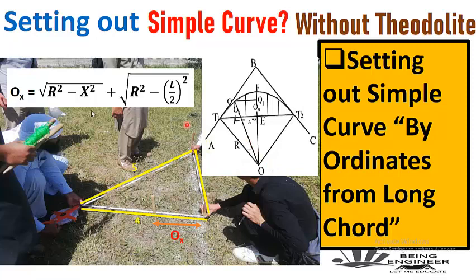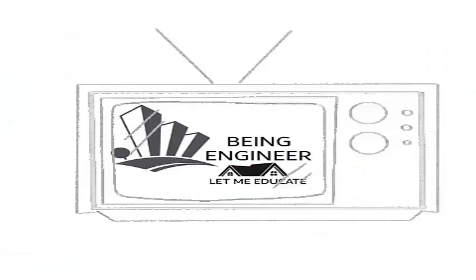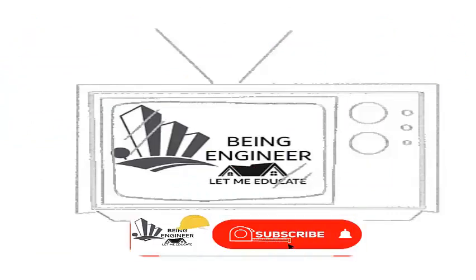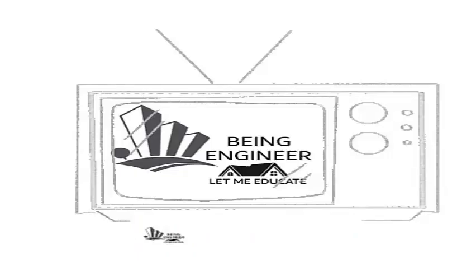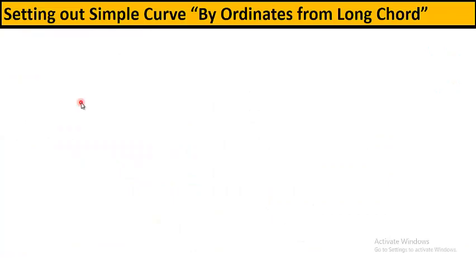In this video we will use the formula for setting out by ordinates from a long chord. We will discuss what R and X are in the upcoming slides. If you are new to my channel, please subscribe and press the bell icon to get more video updates. Let's start today's topic: setting out a simple curve by ordinates from long chord.